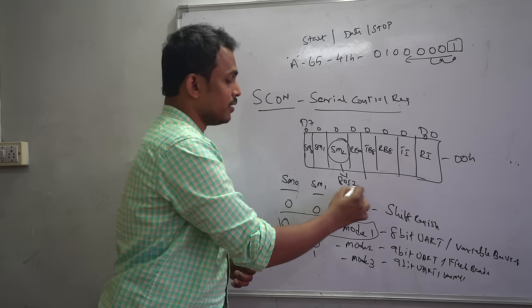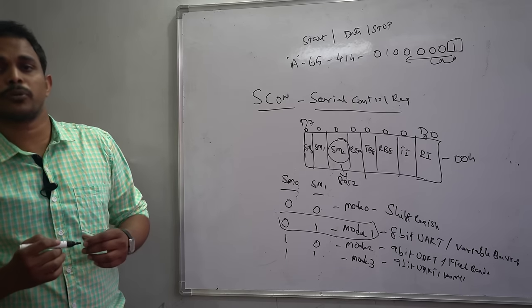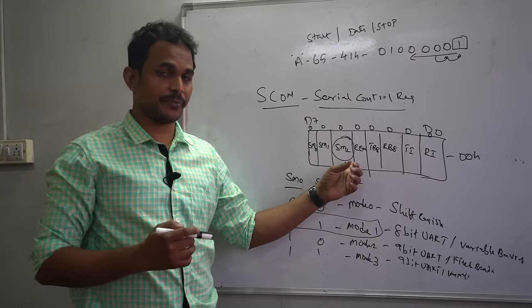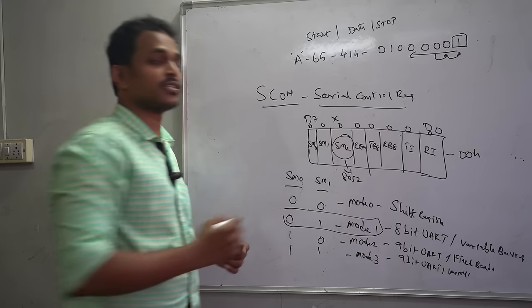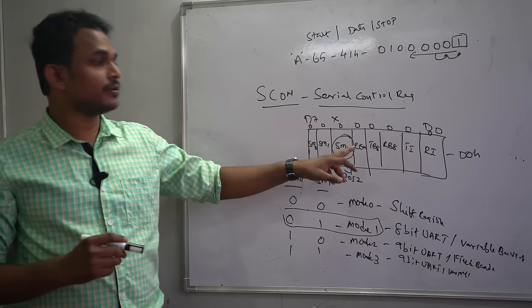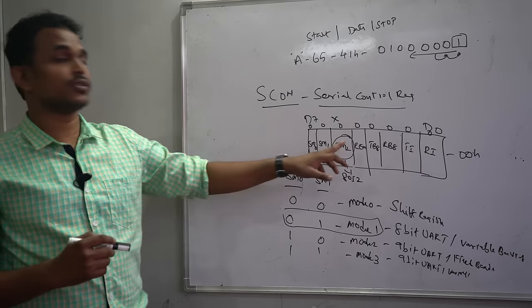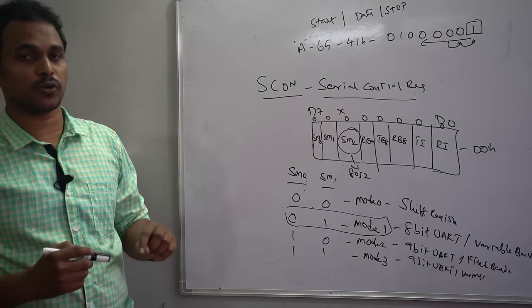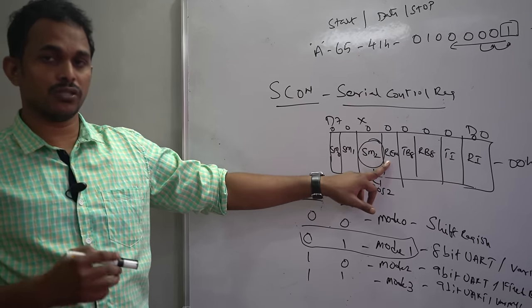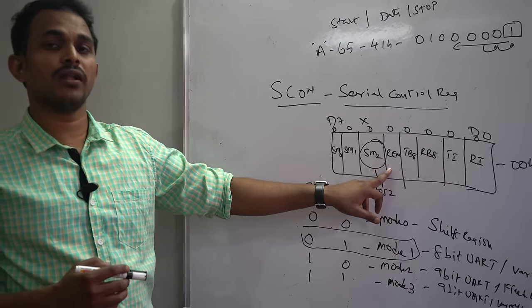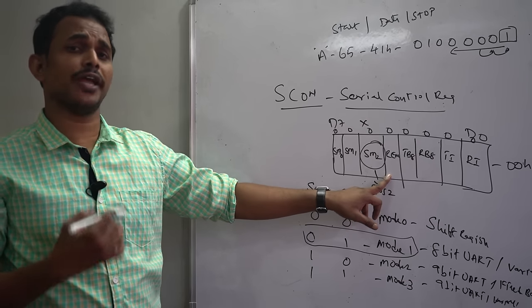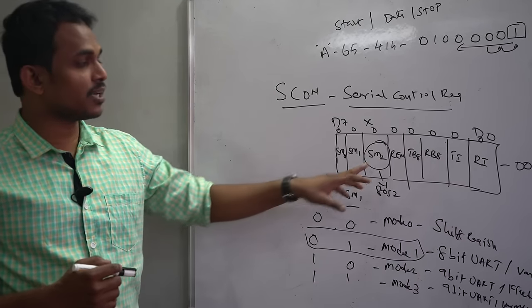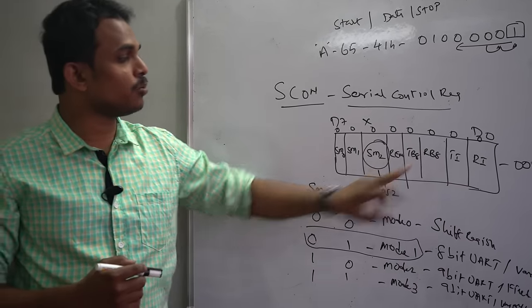The SM2 bit is not used in the 8051 microcontroller; it is relevant for the 8052, which supports two serial ports. SM2 is treated as a don't-care condition in the 8051. The REN bit stands for Receive Enable — when set to logic 1, it allows data reception from an external device to the microcontroller. By default, REN is logic 0.